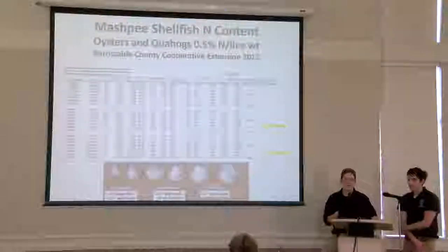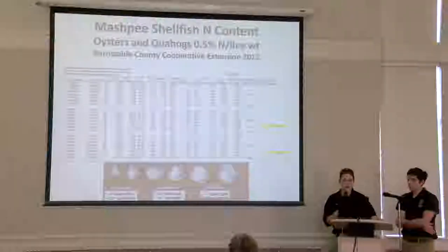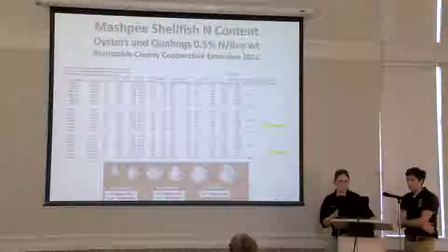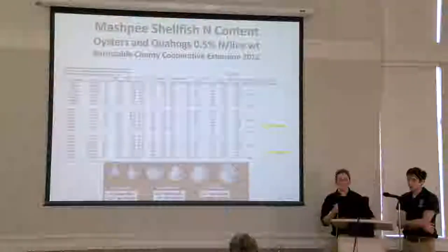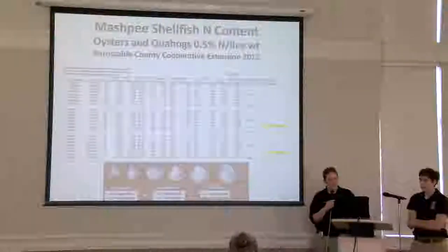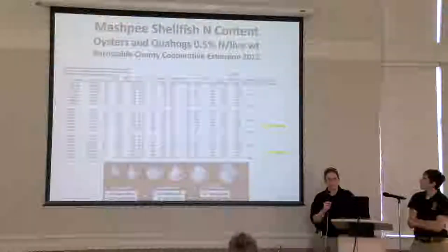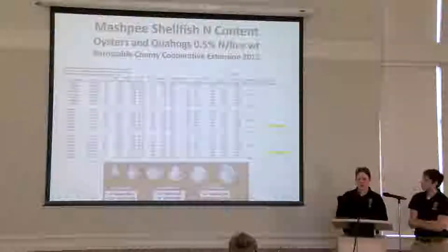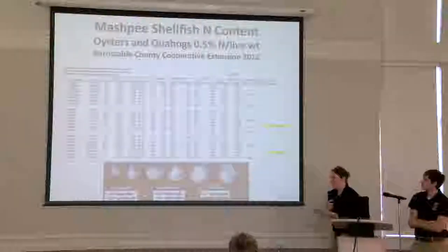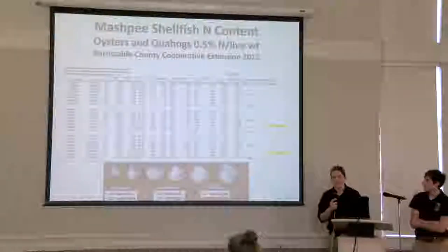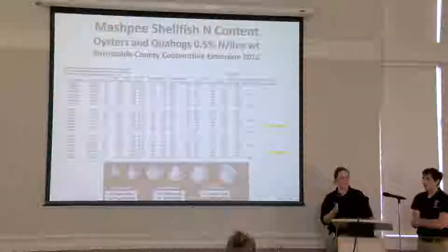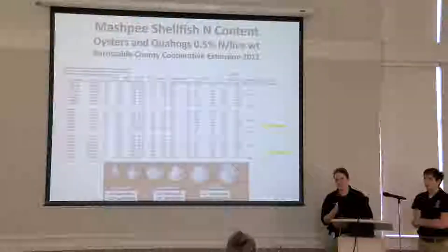Prior to our decision to use quahogs to clean up nitrogen, we did some sampling. We tested the total nitrogen in the quahogs and found that quahogs are just as good as oysters at filtering out nitrogen. They can have as much as 0.5 milligrams of nitrogen incorporated into their gut and shell — and that's at their smallest size, the cherries and little necks. So each little neck can take out 0.5 grams of nitrogen, and as they get bigger they'll take out more.